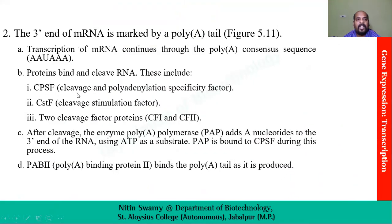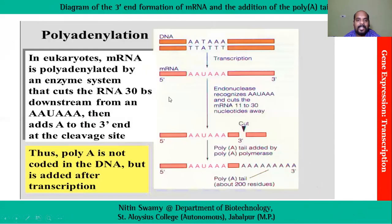After this, there is polyadenylation. After a particular sequence, AAUAAA, poly A polymerase starts adding adenine at the 3' end. The enzyme poly A polymerase adds A nucleotides to the 3' end of the RNA using ATP as substrate. An endonuclease recognizes the AAUAAA sequence and cuts the mRNA 11 to 30 nucleotides away, and then poly A polymerase adds approximately 200 residues of adenine, ensuring that the 3' end is also protected.